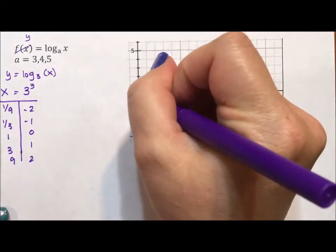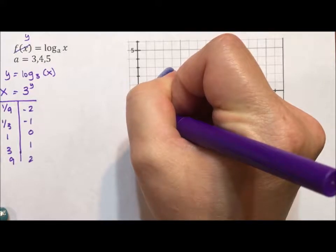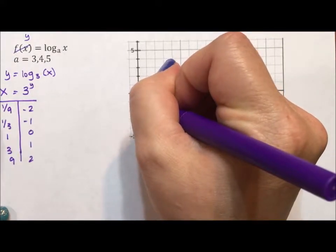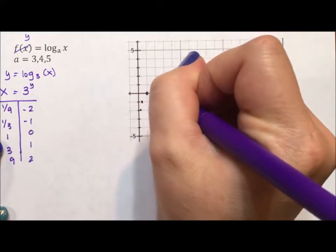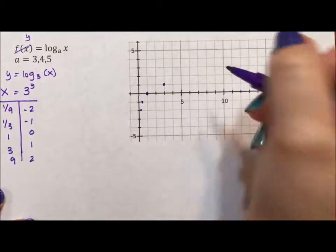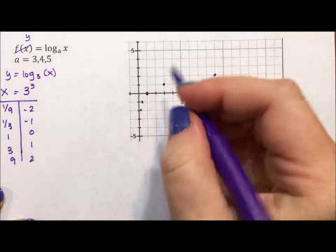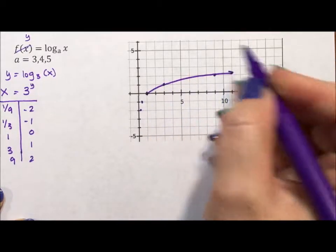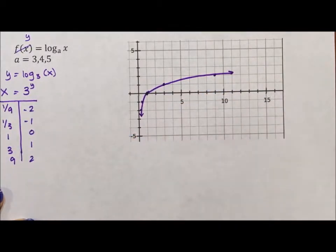So 1 ninth, negative 2, 1 third, negative 1, 1, 0, 3, 1, and 9, 2. And here we have our smooth continuous graph of log base 3 of x.